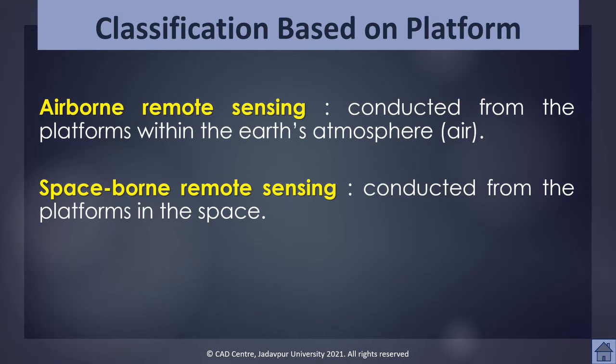However, the images collected by ground-based sensors are not called remote sensing because you have to visit the site to collect the information. Therefore, they are not termed as remote sensing. Remotely sensed data is mainly collected either from platforms within the earth's atmosphere or from platforms in space, that means outside of the earth's atmosphere.